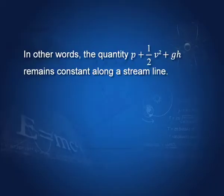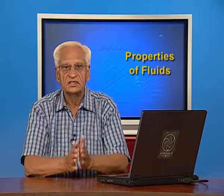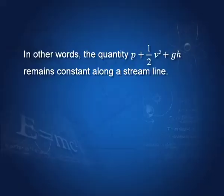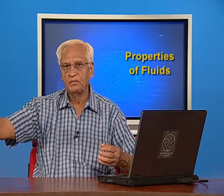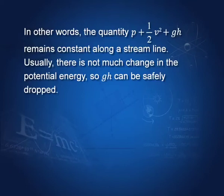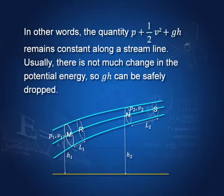It means that this quantity P plus half v squared plus g H remains constant along a streamline. This is all energy - half v squared, g H - and per unit volume this is all energy. So this is the equation of energy conservation as the fluid moves along the streamlines. Usually there is not much change in potential energy, not much change in height. Therefore the last term g H can be dropped.